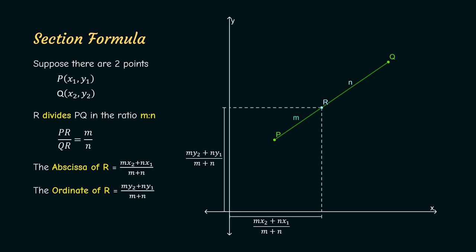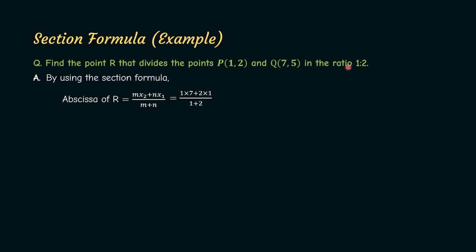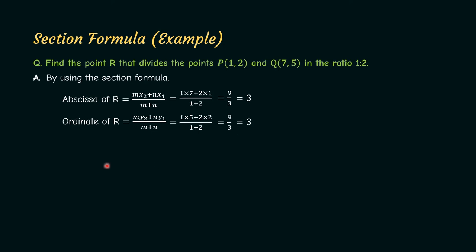We will now see an example problem on the section formula. Find a point R that divides P and Q in the ratio 1 to 2. According to the section formula, the abscissa equals (mx2 plus nx1) by (m plus n), that is (1 into 7 plus 2 into 1) by (1 plus 2). Therefore, the abscissa of R equals 3. Similarly, the ordinate equals (my2 plus ny1) by (m plus n), that is (1 into 5 plus 2 into 2) by (1 plus 2). Therefore, the ordinate of R is also equal to 3. Therefore, the point R is (3, 3). This is our required point.